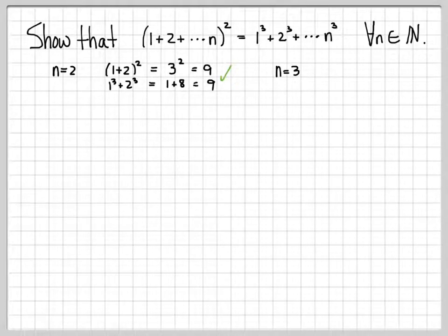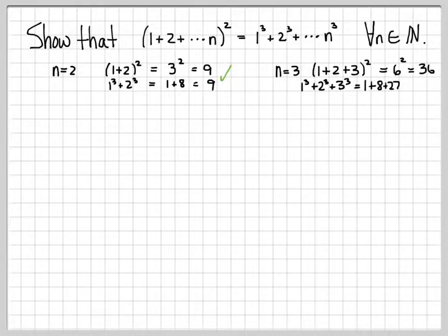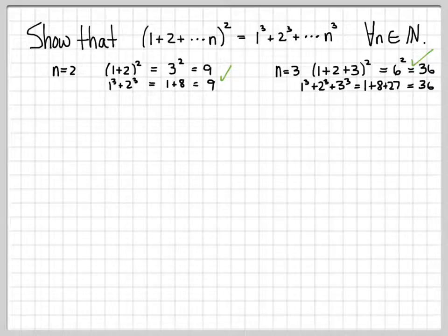What about for n equals 3? The left side says we need to add up 1 plus 2 plus 3, the entire quantity squared. That equals 6 squared, which equals 36. The right side says 1 cubed plus 2 cubed plus 3 cubed, which equals 1 plus 8 plus 27, which also equals 36. So again, this checks out. Plugging in a few values gives us a feel for what this equation is doing — it's not a proof, but it gives us insight into the formula.